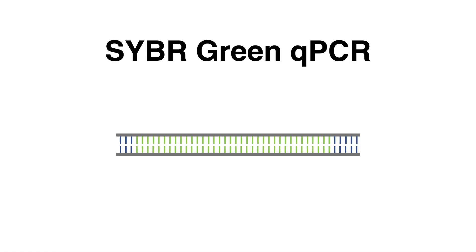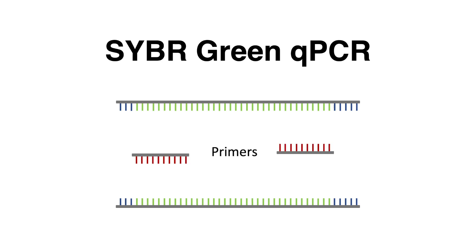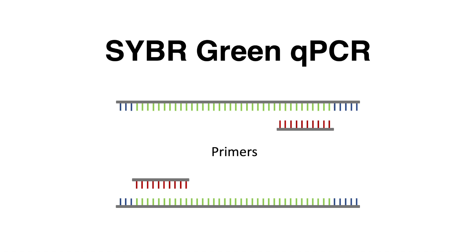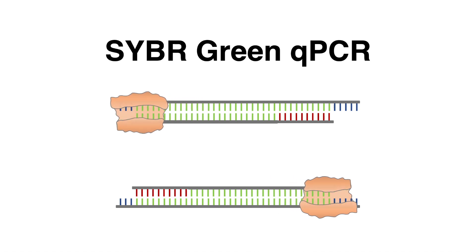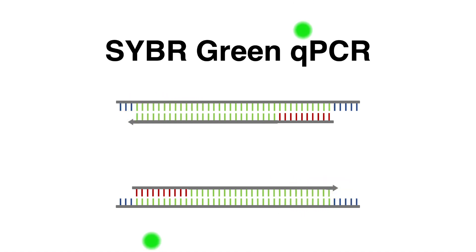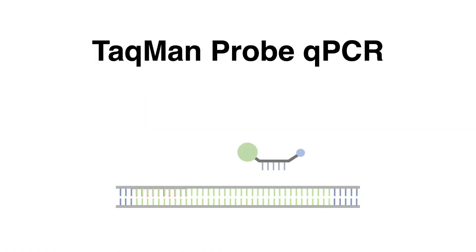In the SYBR Green qPCR method, one PCR cycle starts with the separation of the two DNA strands of the amplicon during denaturation. The primers bind to their complementary parts, flanking the sequence of interest. The polymerase starts with the synthesis. The SYBR Green dye binds the double-stranded DNA fragments and the fluorescence is monitored after each cycle.